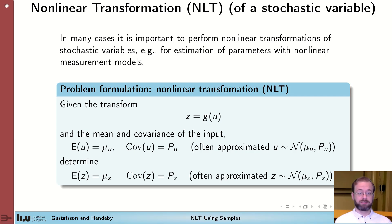Nonlinear transformations, NLT for short, of a stochastic variable is a useful tool for example when making parameter estimation. The problem is formulated as follows: Given a stochastic variable u with mean mu_u and covariance P_u, determine the stochastic properties of the variable z which is the function g of this variable u. We are looking for the mean mu_z and the covariance P_z of the resulting variable z.